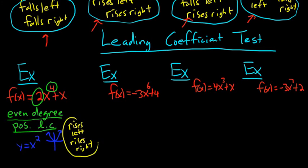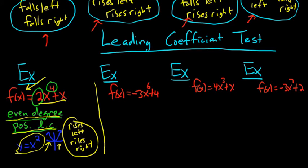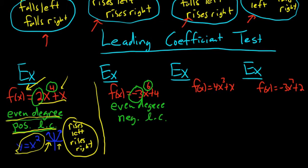Whenever you have even degree and positive leading coefficient, just memorize that graph — the end behavior of your function matches it. You could also graph it on your calculator. Now for f(x) = -3x⁶ + 4: again even degree, but this time a negative leading coefficient. The simplest example is y = -x², an upside-down parabola. So the answer is falls left, falls right.